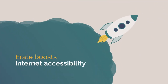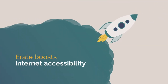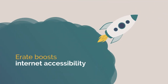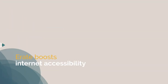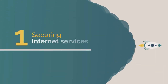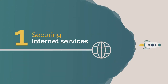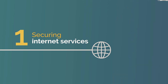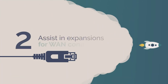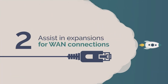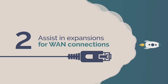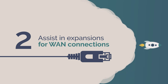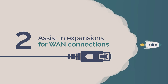E-RATE boosts internet accessibility by addressing two main categories. One, providing discounts to assist in securing internet services for all districts and libraries. Two, providing discounts to assist in expansion for WAN connections across entire school districts or library systems.